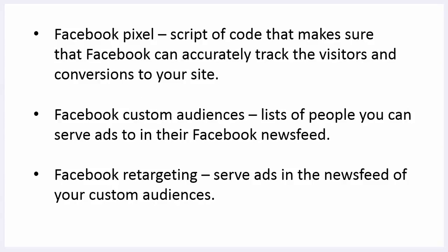The Facebook pixel is a script of code that makes sure Facebook can accurately track the visitors and conversions to your site — conversions being leads, sales, and buyers. The pixel allows us to create that code. When somebody hits a blog page, that code sends information to Facebook that sets up what is called a custom audience. The custom audience is basically a list of people you can serve ads to in their Facebook news feed. It's like an autoresponder — a follow-up mechanism — and with custom audiences we're able to follow up even without an email address.